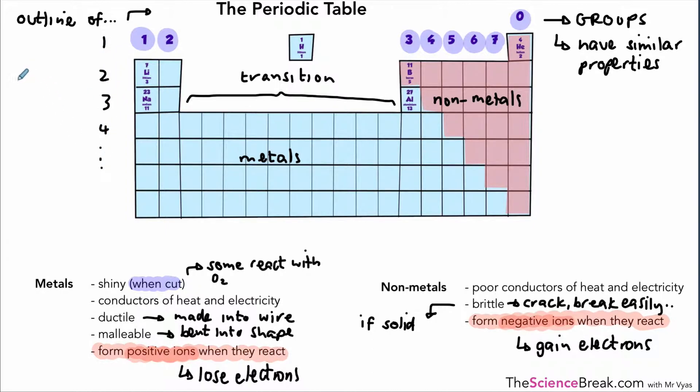Going down the side here we have what's called the periods. So we go 1, 2, 3, 4, and so on. The periods go across, but they also tell you the number of shells in the atoms of the elements that are present in that period. So if you take an element from period 3, the atom of that element will have three shells in its structure. The periods tell you the number of shells on the atoms.